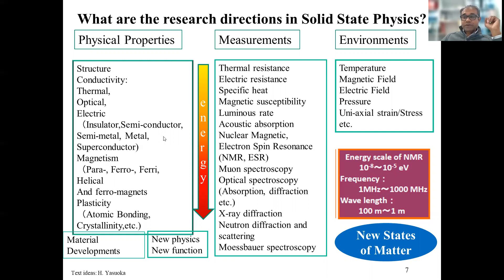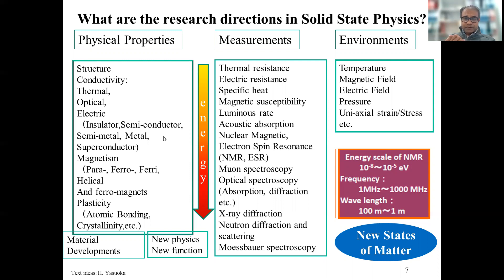How do you know these things? You have to do some kind of measurements. You do the following: thermal resistance, electrical resistance, heat capacity or specific heat — which gives you information about entropy. To understand the magnetic properties, you do bulk magnetic susceptibility measurements, luminescence rate, acoustic absorption, and bulk and local probes like nuclear magnetic resonance (NMR) and electron spin resonance (ESR) spectroscopy.